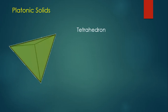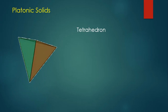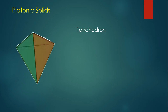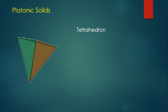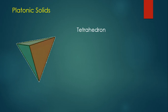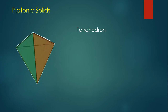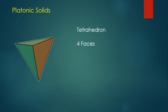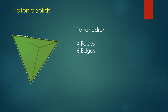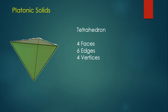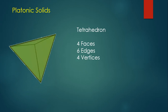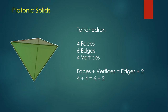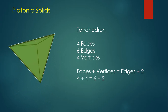The next platonic solid is the tetrahedron. It's actually one of three platonic solids that have faces made up of equilateral triangles. For the tetrahedron, we have four of those triangular faces. We also have six edges and four vertices. Verifying with Euler's theorem shows us that 4 plus 4 does equal 6 plus 2.